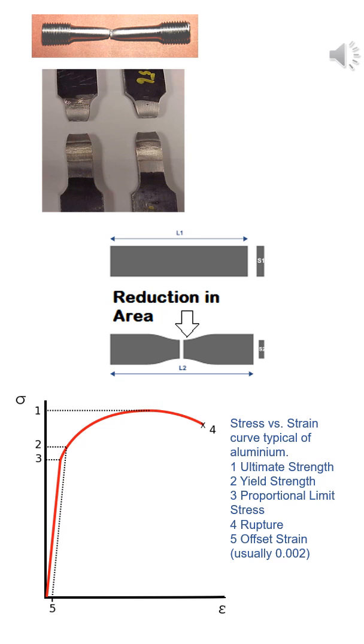Elongation, how much it stretches before breaking. Yield point and yield strength, when permanent deformation begins. Tensile strength, the maximum force before failure. Reduction in area, how much the cross-section shrinks before breaking.